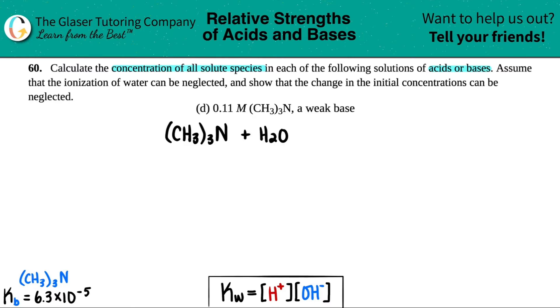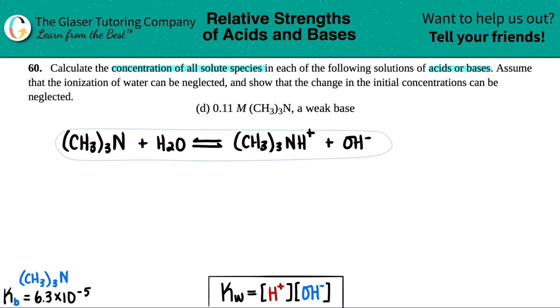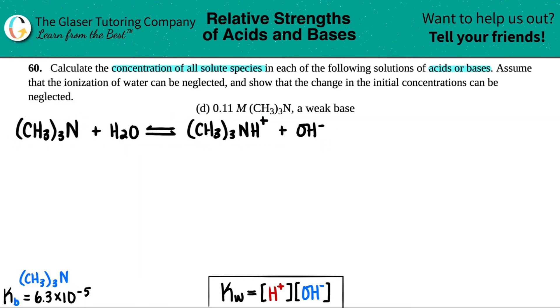You have to write this with water to get the correct balanced equation. So you have CH₃₃N plus H₂O. It's a weak base, so I know I'm at equilibrium. Bases gain a hydrogen, so it's basically the same thing but with an H: CH₃₃NH plus, that's your conjugate acid. The water will lose a hydrogen and becomes OH minus. That's why we need to incorporate H₂O, to show that we have hydroxide ions in solution.